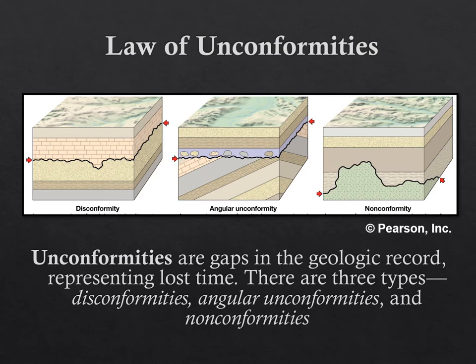A disconformity occurs when layers of sediment are deposited, lithify, and are uplifted. The uppermost layer becomes eroded. New sediments are then emplaced on top, usually due to rising sea level. In this textbook example, the uppermost layer gets eroded, and new limestone is emplaced on top of that layer of erosion. This point outlined in bold with red arrows represents our disconformity — it's a point between the older layers beneath it and the younger layers on top that has missing sections.